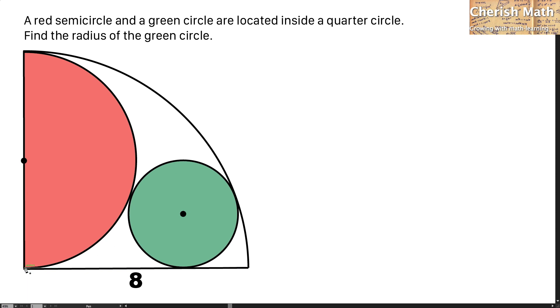I'm going to draw a line from the center of the quarter circle until this point here. And this line serves as the radius of the quarter circle as well. So if I'm taking the radius of the green circle as r, and for this part, that is going to be 8 minus r.